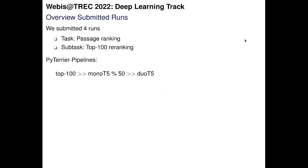Overall, we submitted four runs to the Deep Learning Track and we focused on the Passage Ranking Task and more specifically on the Reranking Subtask. We re-ranked the official Top 100 Baseline. We used the official Top 100 Baseline, re-ranked the Top 100 with Mono T5, and the Top 50 of the Mono T5 results were re-ranked with Duo T5. So it is a classical Mono T5 pipeline.